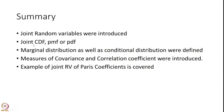Let us quickly summarize. We introduced joint random variables, the joint cumulative distribution function, the probability mass function for discrete joint random variables, and the probability density function for continuous joint random variables. We defined marginal and conditional distributions, the covariance and correlation coefficient for two joint random variables, and gave an example using Paris coefficients estimated from several random fatigue crack growth experiments. Thank you.